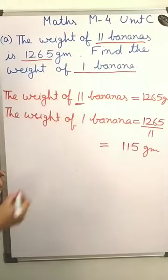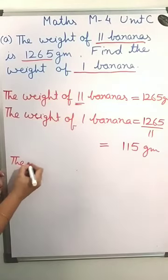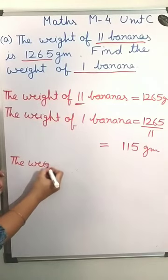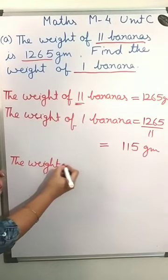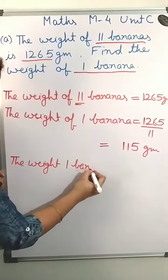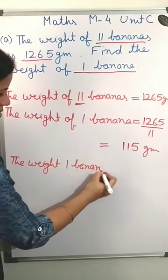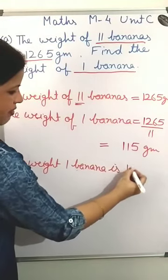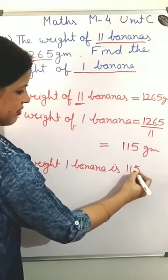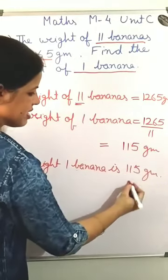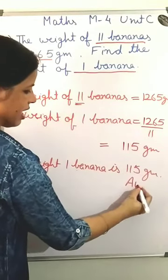So write down the answer: the weight of 1 banana is 115 grams. So this is your answer.